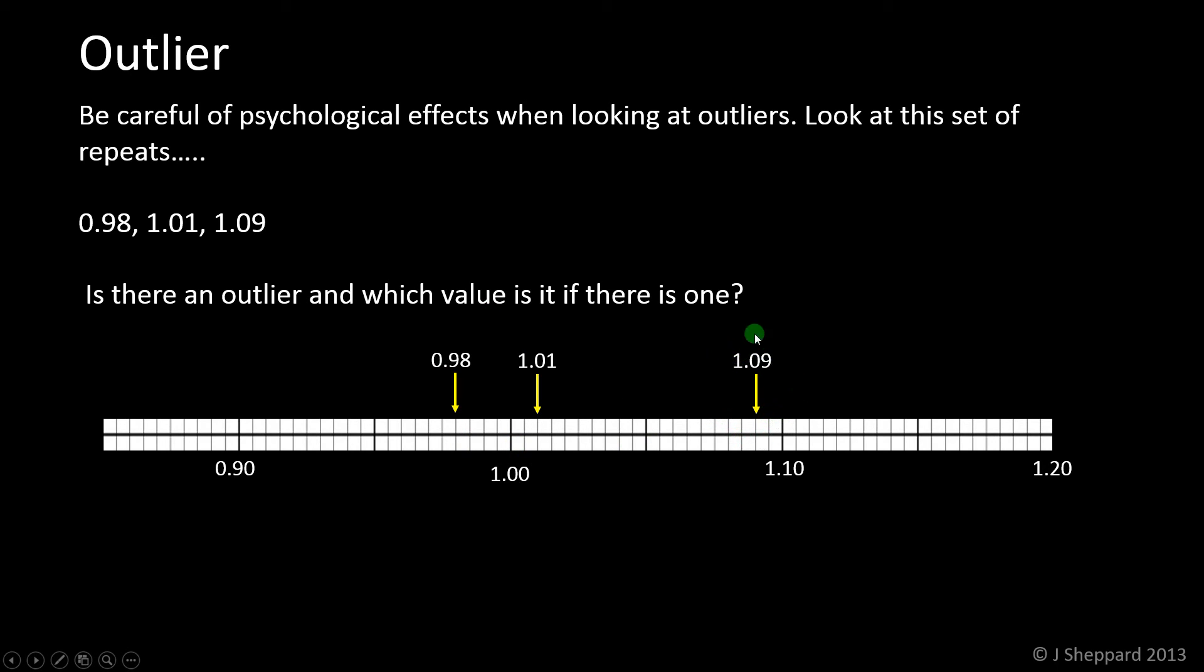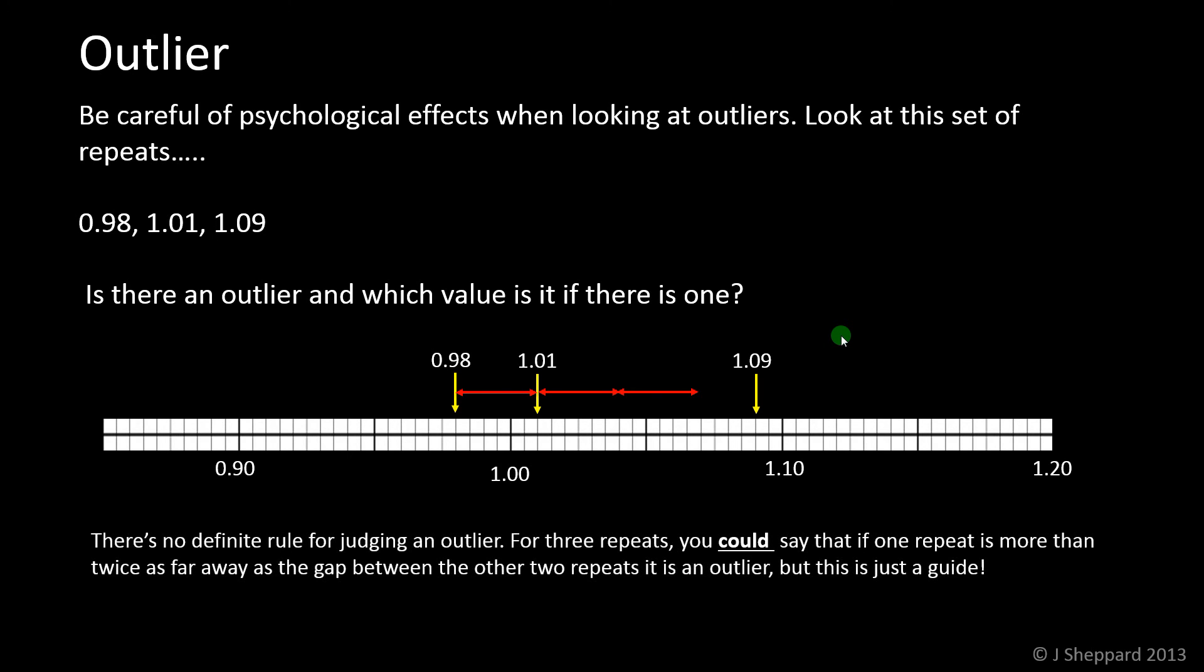The question is, is the 1.09 an outlier? Is it far enough away? It's very difficult to judge that. You've got to make a judgment call. One thing you can do if you're doing a standard set of three repeats is to say, is the third repeat more than twice as far away as the distance between the two that are close together? If it is, you could probably say it's an outlier. What you could also do is take some more repeats and see if you just get a spread that's quite large. Part of doing a good job on the data analysis task is to be adaptive. If you're not sure whether that's an outlier, you could take an extra repeat. If your fourth repeat comes in at 0.99, then you've got more evidence that the 1.09 is an outlier. If your fourth repeat comes in at 1.05, then probably the 1.09 isn't an outlier, and it's just that your results aren't very repeatable.